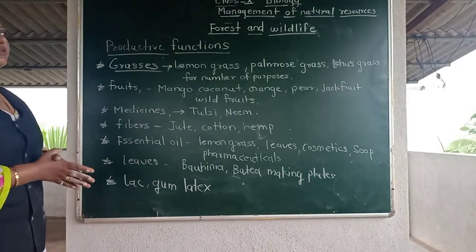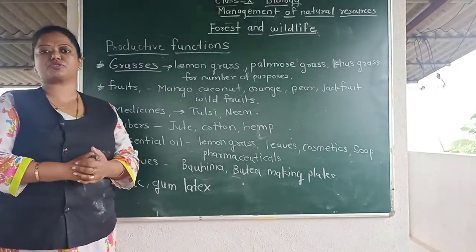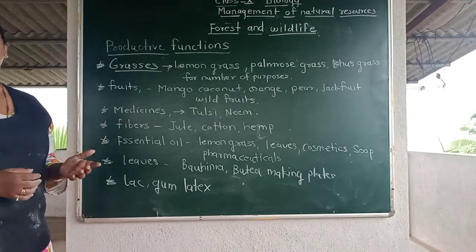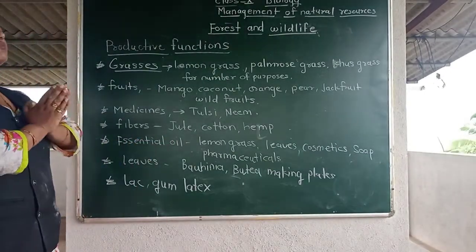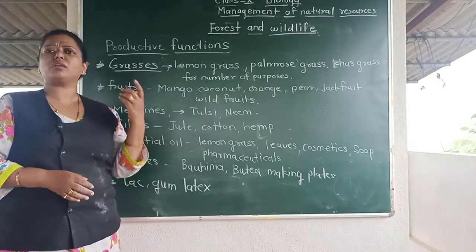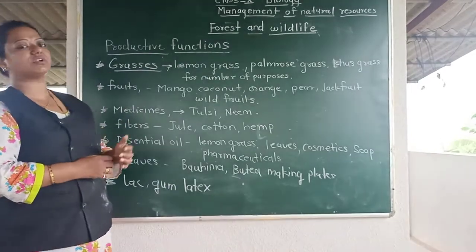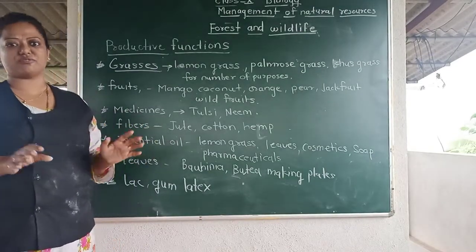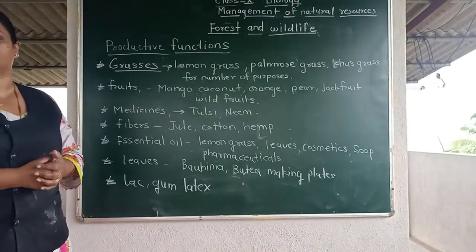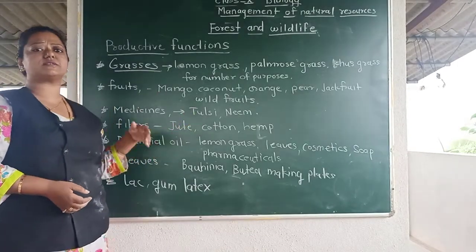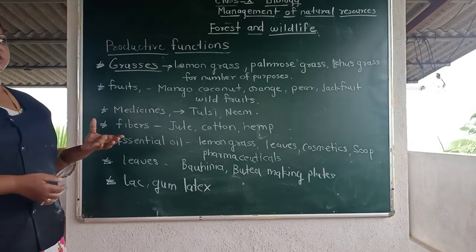Fruits are also obtained from the forest. Some fruits grow naturally in the forest such as mango, coconut, orange, pear, jackfruit, and some wild fruits. The people living in the forest — the Adivasis — are completely dependent on the forest for all their needs, surviving on fruits and food from the forest. Examples include mango, coconut, oranges, peach, pear, and jamun.